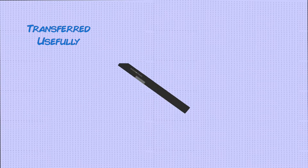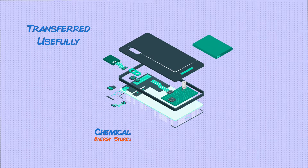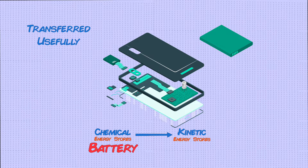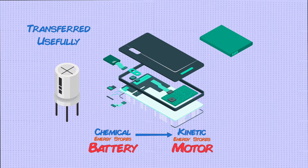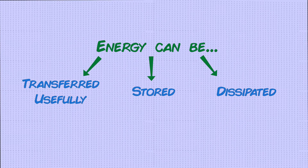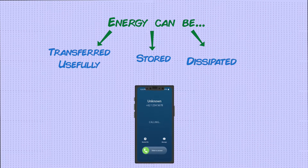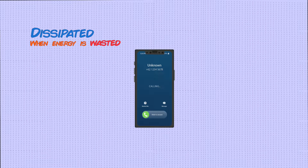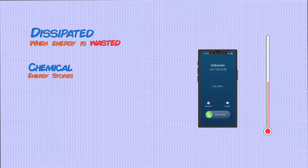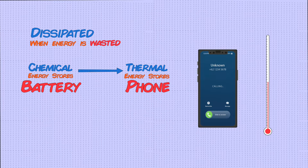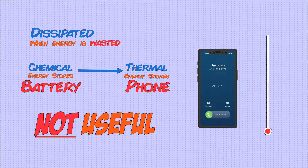A useful transfer is when you get a call and your phone vibrates — the energy is transferred from the chemical energy stores in the battery to the kinetic energy stores of the motor, which turns and causes it to vibrate. A storage of energy is the way that energy is stored in the battery in its chemical energy stores. The dissipation of energy is when energy is wasted as something that's not useful for the appliance — when you use a phone it gets slightly warmer, because energy is being dissipated from the chemical energy store of the battery to the thermal energy store of the phone. This is not useful for the phone and it wastes the energy stored in the battery.